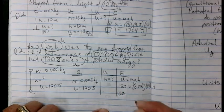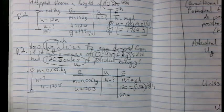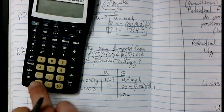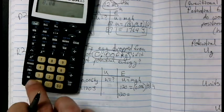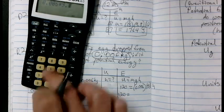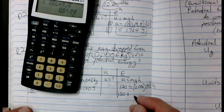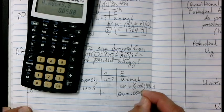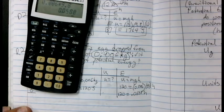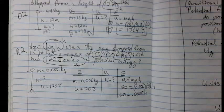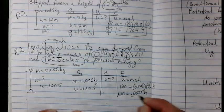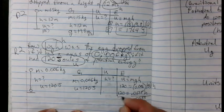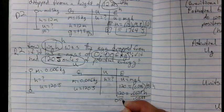One step. 120. And then 0.006 times 9.8 equals 0.0588 times H. Now what do I do with my algebra? I'm going to divide both sides by 0.0588.